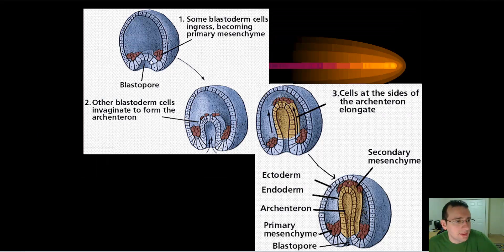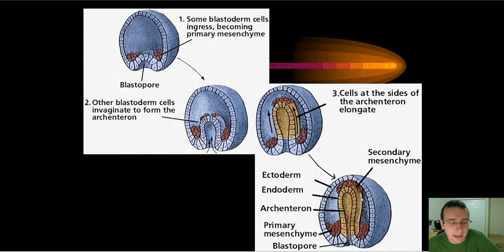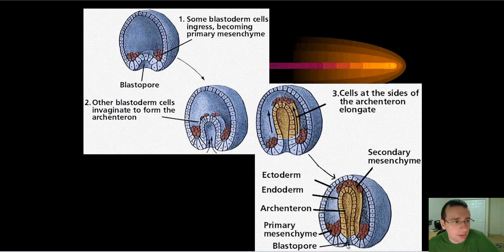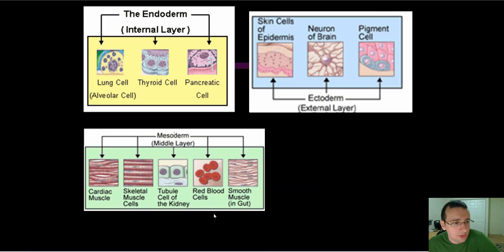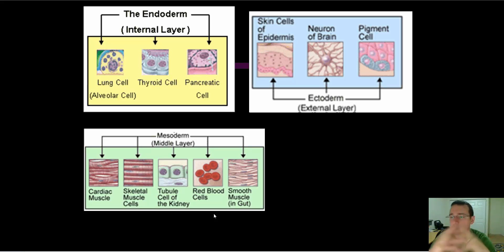In some organisms, this happens in a more advanced way where a new layer of cells will actually develop in between the endoderm and the ectoderm within the blastocoel. That's what we call the mesenchyme or the mesoderm, and it develops into the middle layers of tissue. That hole — that opening in the middle, which we call the archenteron — is going to become the gastrocavity of the animal. And that blastopore is going to become either the mouth or the anus of the animal.